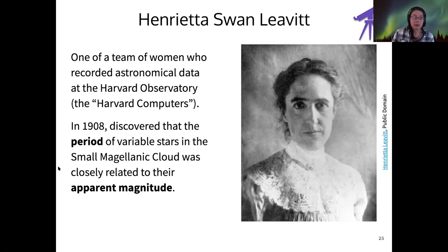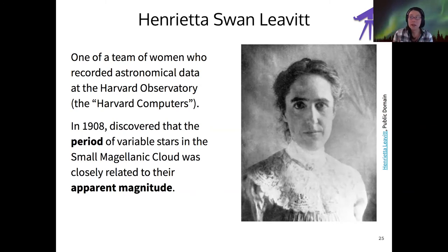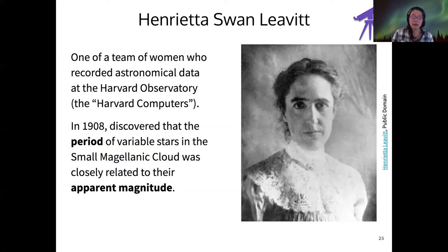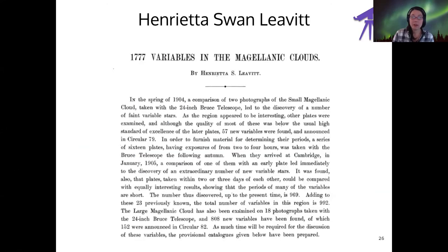The contribution of Henrietta Leavitt in particular was that she discovered that the period of variable stars in the Small Magellanic Cloud was related to their apparent magnitudes — the brightnesses that we measure here on Earth. She found this relationship in 1908, and this is her paper: '1777 Variables in the Magellanic Clouds.'